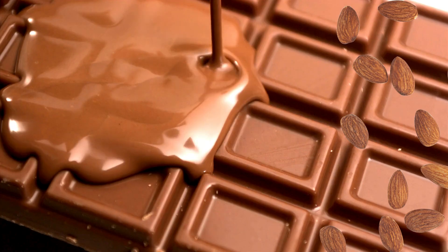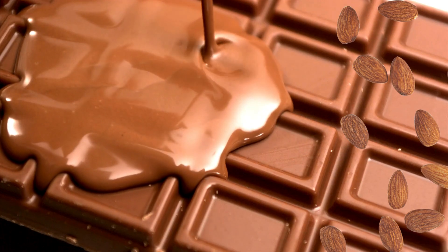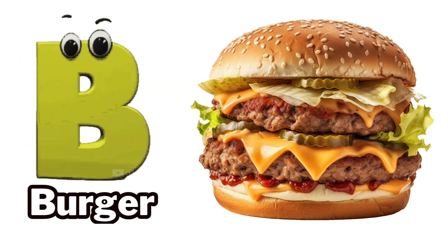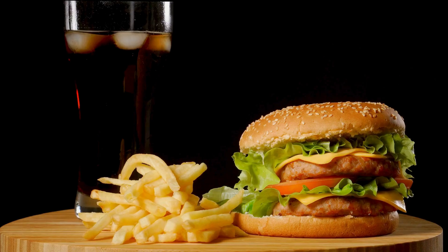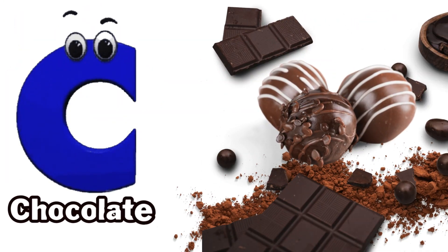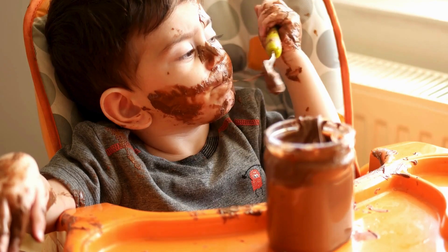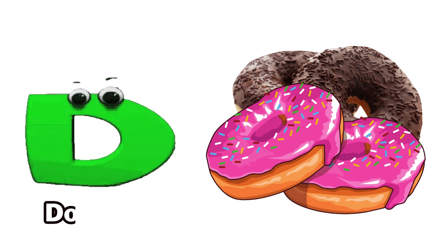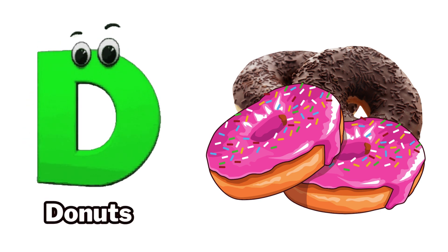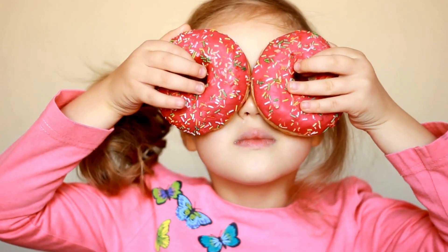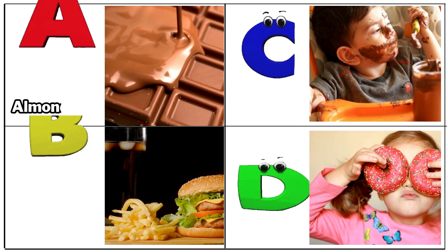A is for almond oil. B is for burger. C is for chocolate. D is for donuts.